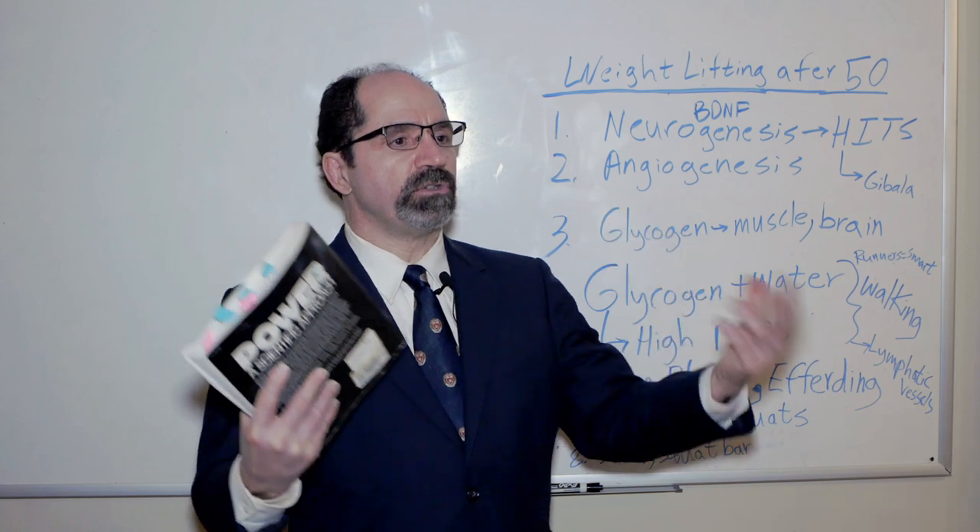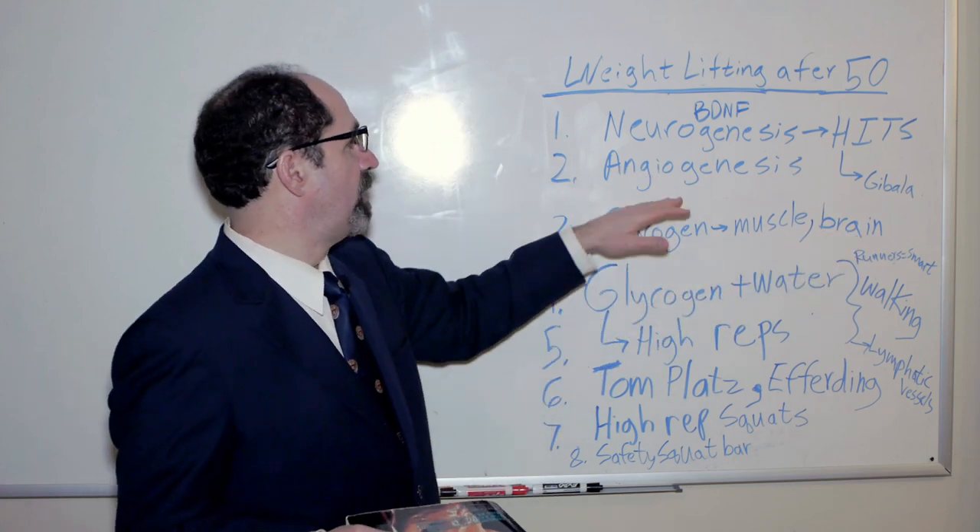Typically in animals, exercising and using your brain go together. When you're moving around in the forest or jungle, you're simultaneously using your brain and your body. That's good because a lot of the things that are happening in your muscles also happen in your brain. Just as your muscles will store more glycogen, your brain also stores more glycogen when you're exercising. It's called glycogen super compensation.